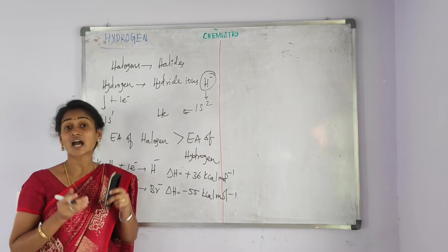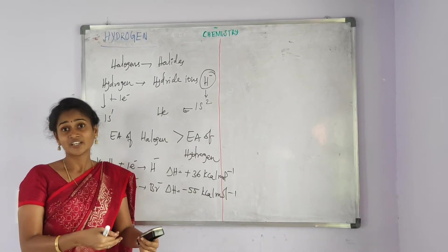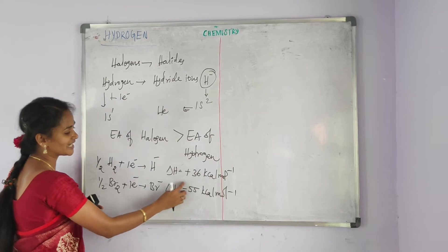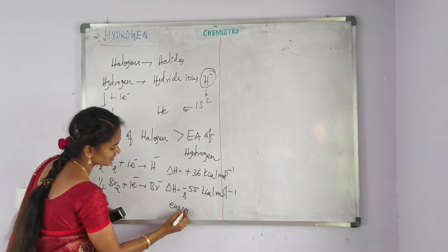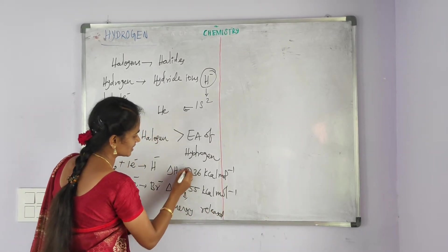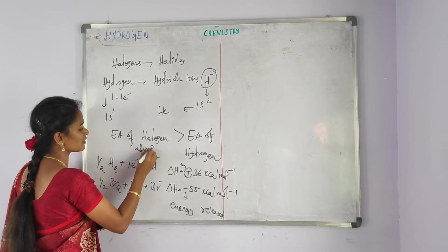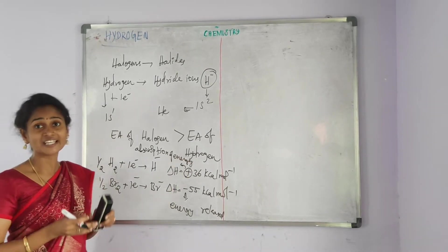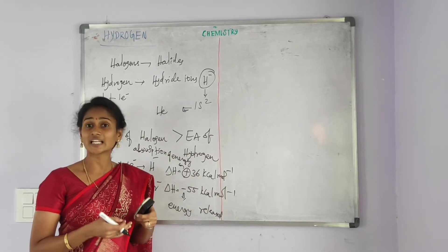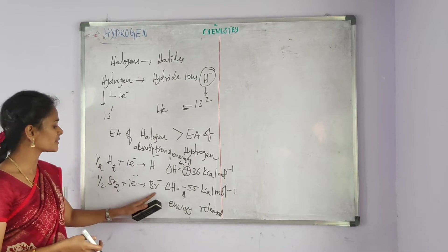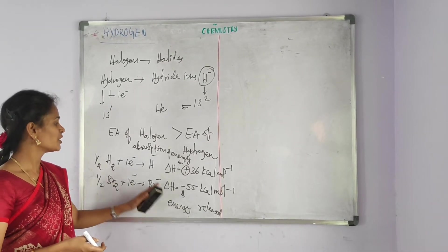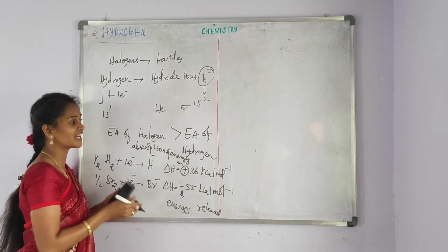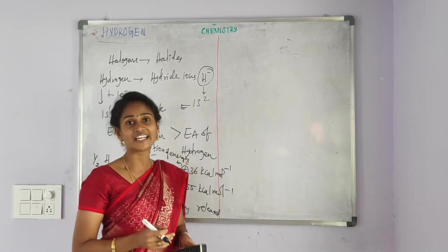In general, electron affinity is the amount of energy released when a neutral gaseous atom accepts an electron to form an anion. A negative value indicates energy is released, while a positive value indicates absorption of energy. Formation of bromide ion releases energy, but formation of hydride ion absorbs energy — that is why the electron affinity of hydrogen is less than that of halogens.